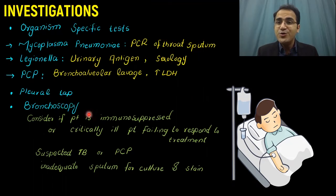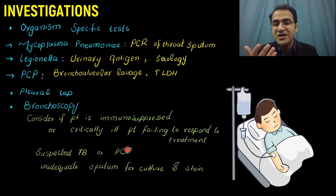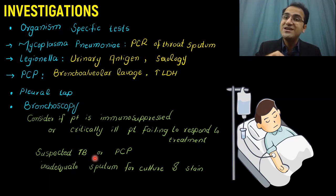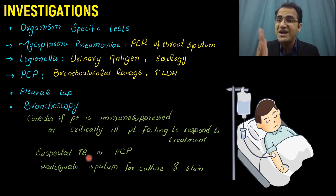Bronchoscopy is an invasive procedure reserved for patients who are not responding to treatment, are immunocompromised, critically ill, or in whom TB or PCP pneumonia is suspected. It is also used when the patient is unable to produce sputum, meaning you cannot obtain cultures. In these patients, bronchoscopy allows you to get directly inside the lungs, take a sample, and send it for detection of TB, PCP pneumonia, or other organisms. Bronchoscopy should be reserved for severe patients not responding to antibiotic therapy.